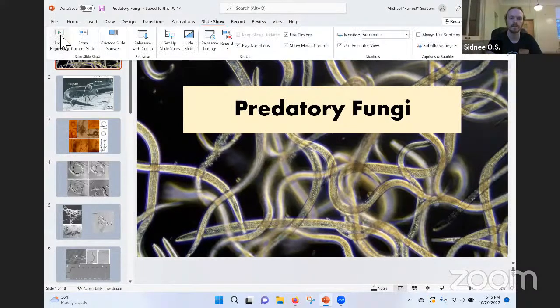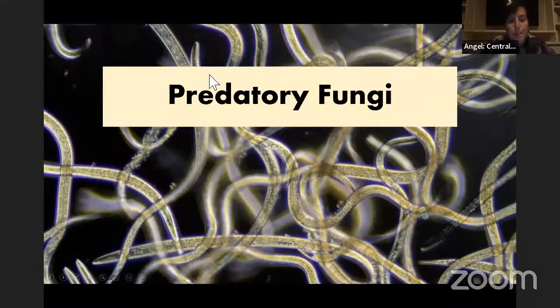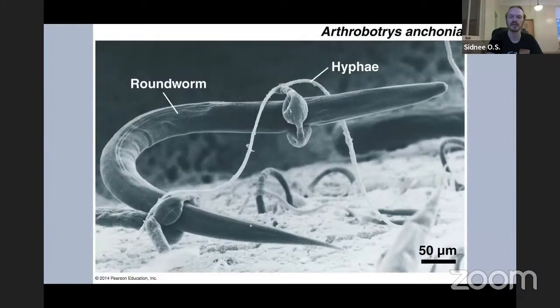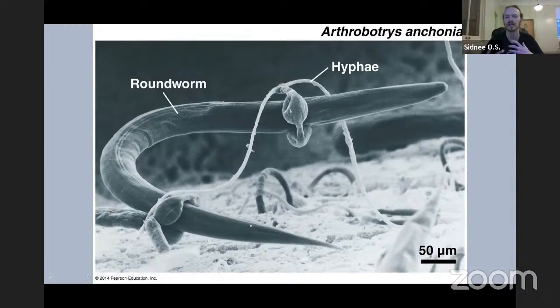I'm going to go ahead and share my screen. [Screen visible] These in the back are actually little nematodes on a microscopic scale — these small wiggling worms. This is probably the least debated example of predation in fungi — one of the most well-evolved and pretty much discretely nematode-killing mechanisms out there.